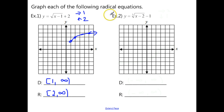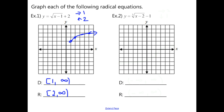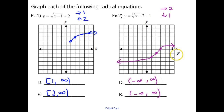Now try the same idea using the cube root parent function for Example 2. Take your critical points, shift them right 2 and down 1, and remember what the cube root curve looks like. The domain and range should both be negative infinity to positive infinity.